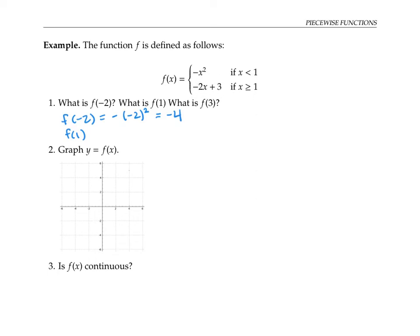And so we can plug one into the formula negative two x plus three. So that's negative two times one plus three, which gives us one as our output.